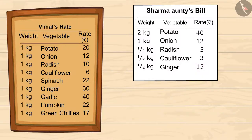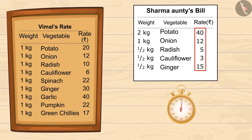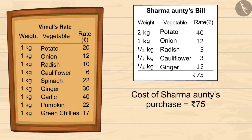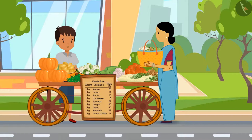This is the cost of shopping done by Sharma auntie. Now let's add all of this to find out the total price. Kids, you can pause the video to find out the sum. Vimal has already added all the numbers — the total is 75 rupees. Sharma auntie has to give 75 rupees to Vimal.